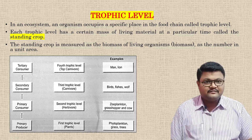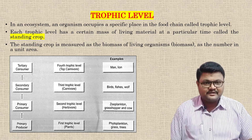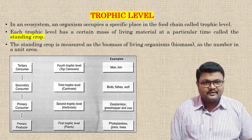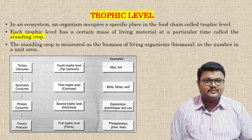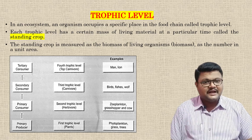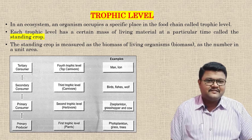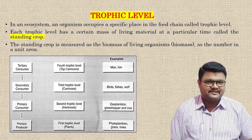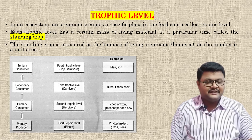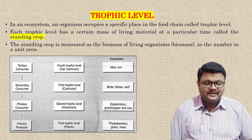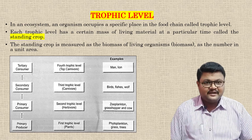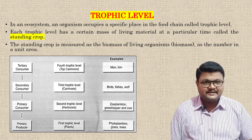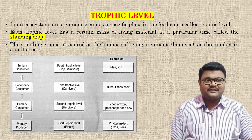When organisms are at the consumer stages — primary, secondary, or tertiary — they hold a particular biomass, and that biomass is called the standing crop. For example, considering vegetarian organisms with respect to grass, there are many organisms which eat plants. That particular section of herbivores, or primary consumers, holds a particular biomass at that section — this is called the standing crop. Similarly, secondary consumers and tertiary consumers each have their own standing crop representing biomass at that level.